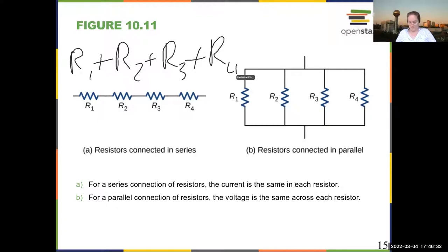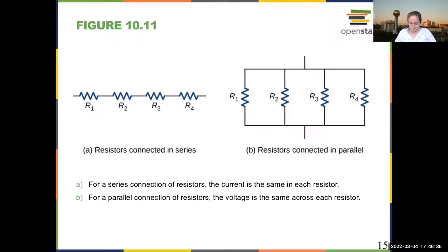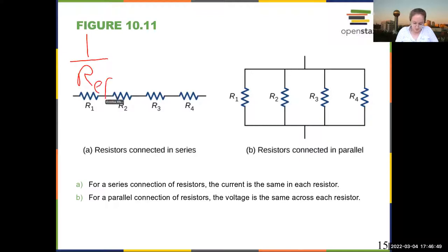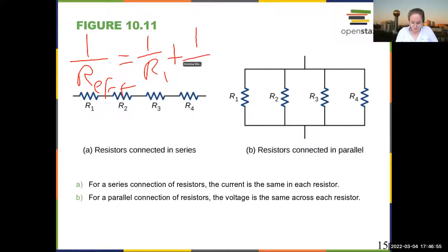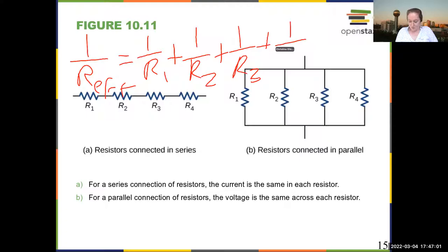When you have resistors in parallel, this is a little bit more complicated and the math gets a little bit uglier. You add their inverses. So 1 over the effective resistance of this element is equal to 1 over R1 plus 1 over R2 plus 1 over R3 plus 1 over R4.